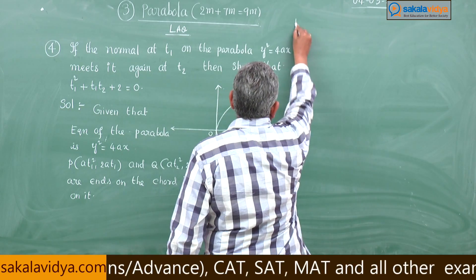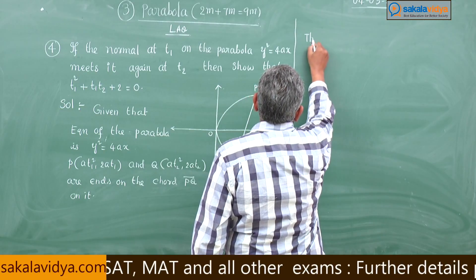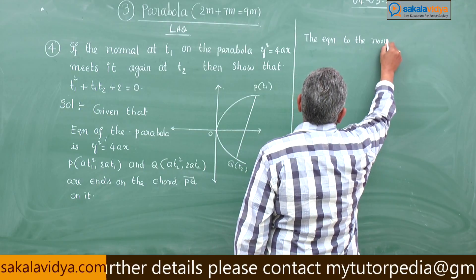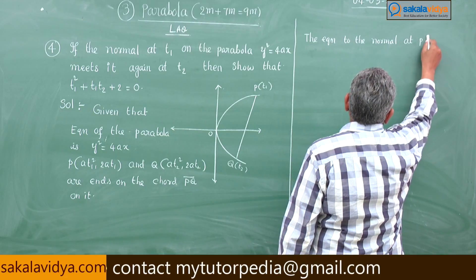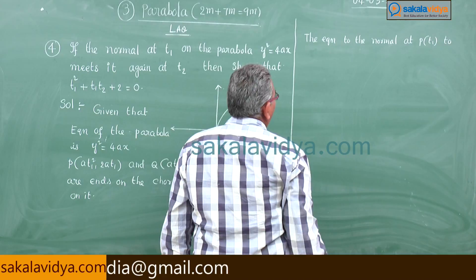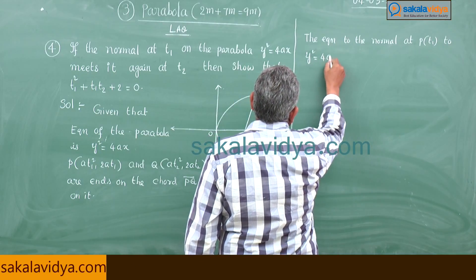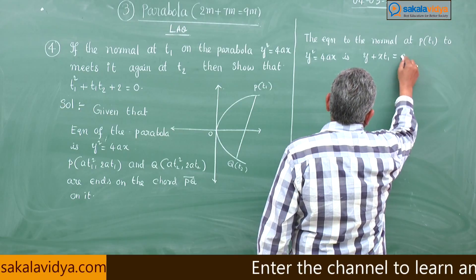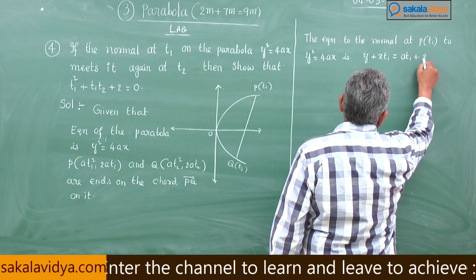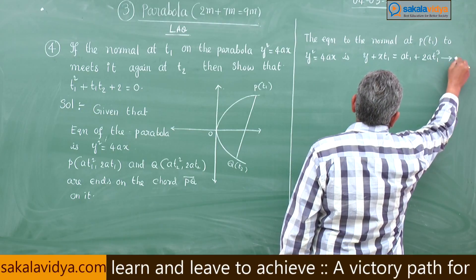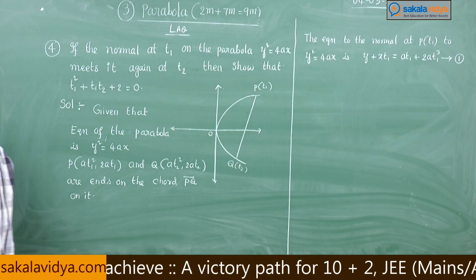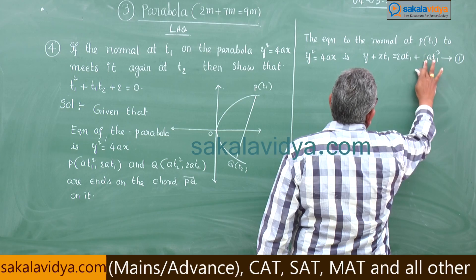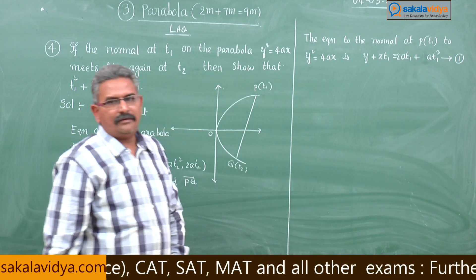First, the equation to the normal at P of t1 to y squared is equal to 4ax is y plus x·t1 is equal to 2a·t1 plus a·t1 cubed. Say equation 1. This is, just check whether we have done it correct or not. So this is 2a·t1, this is a·t1 cubed: 2a·t1 plus a·t1 cubed.